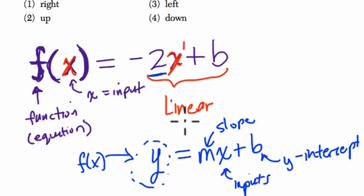So one way to think about this is that if you raise this y-intercept by 4, the line would shift up 4 units. Choice 2.